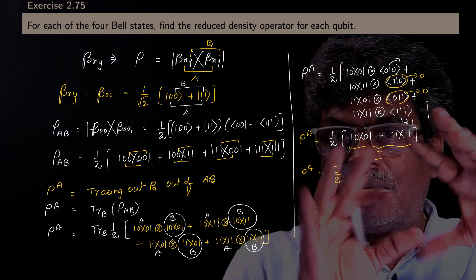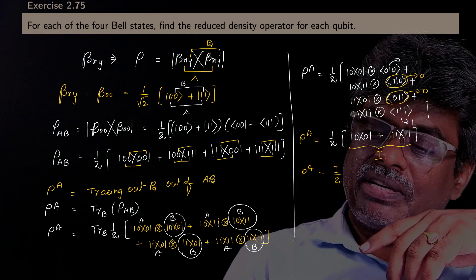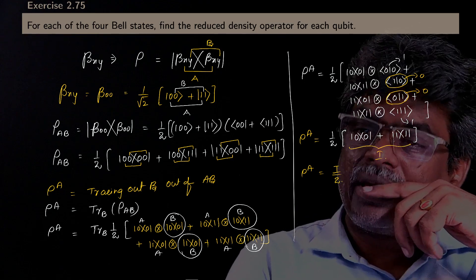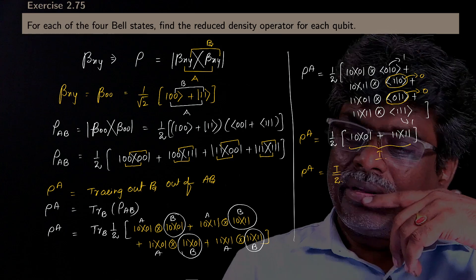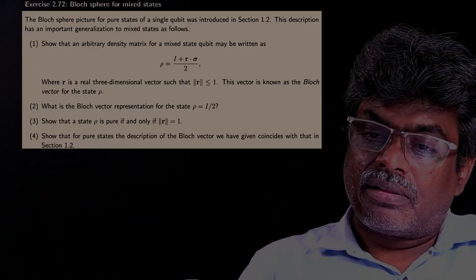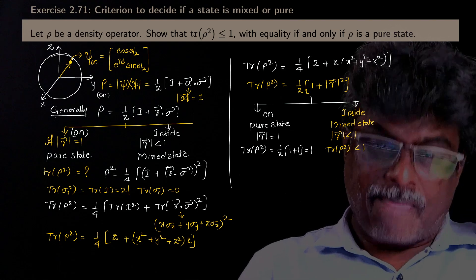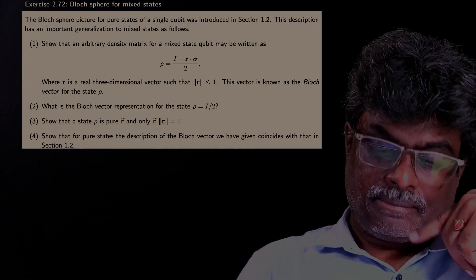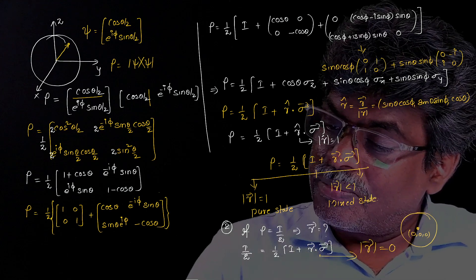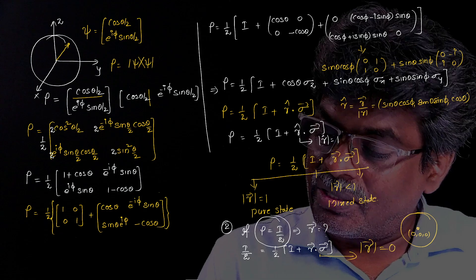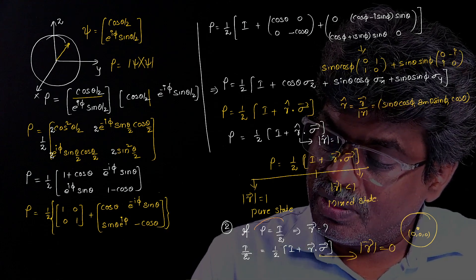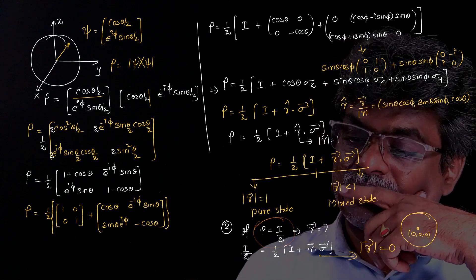If you observe carefully, whenever you have a Bell state and find the reduced density operator corresponding to any single qubit, you get I/2. This is an answer we have seen somewhere before — rho = I/2.